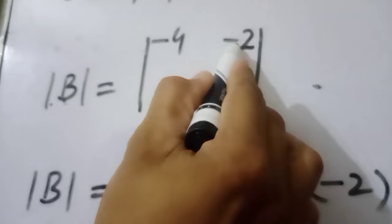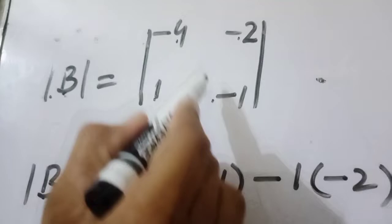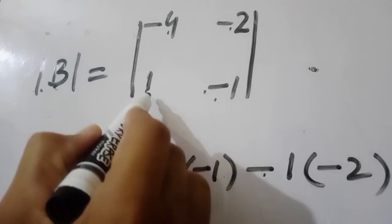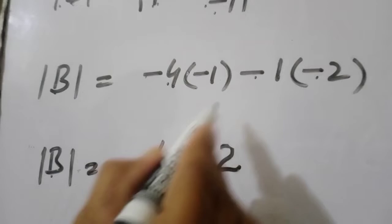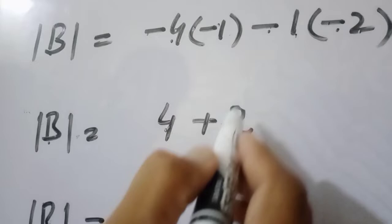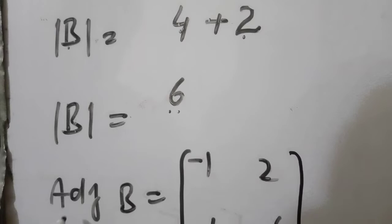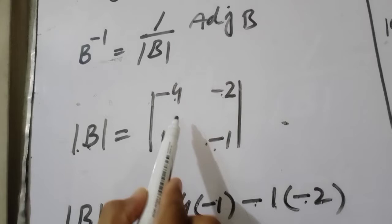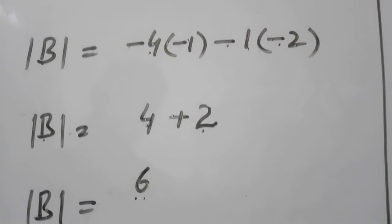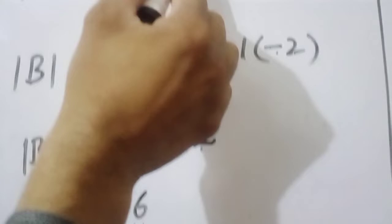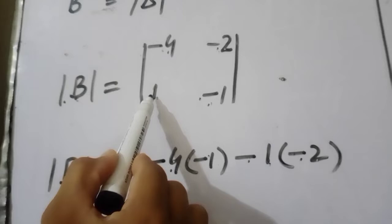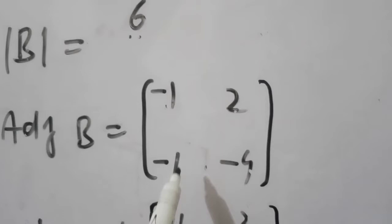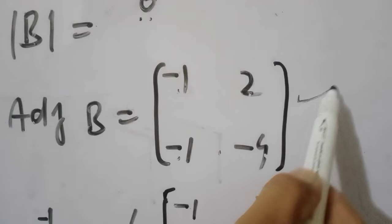B का matrix: minus 4, minus 2, 1, and minus 1. det(B) equal to minus 4 multiply minus 1 — formula में minus की sign — 1 multiply minus 2. det(B) equal to minus minus plus 4 (1 daa 4) minus minus plus 2 (1 daa 2). det(B) equal to 4 plus 2 = 6. Adjoint B निकालेंगे: entries exchange करें: minus 1, minus 4; sign change: minus 2 plus हो जाएगा और minus 1 plus हो जाएगा।